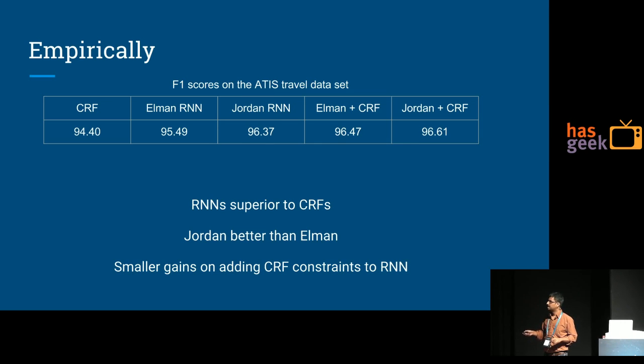CRFs, Elman RNNs, Jordan—Jordan adds those output dependency to hidden state. Elman plus CRF: a variety of combinations that you can build. Note that there's Jordan plus CRF which has both output dependencies in y_t and the loss function together.